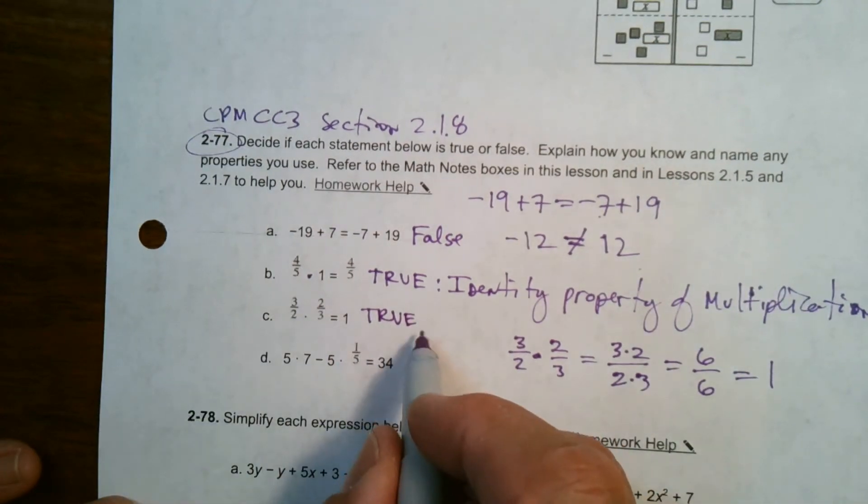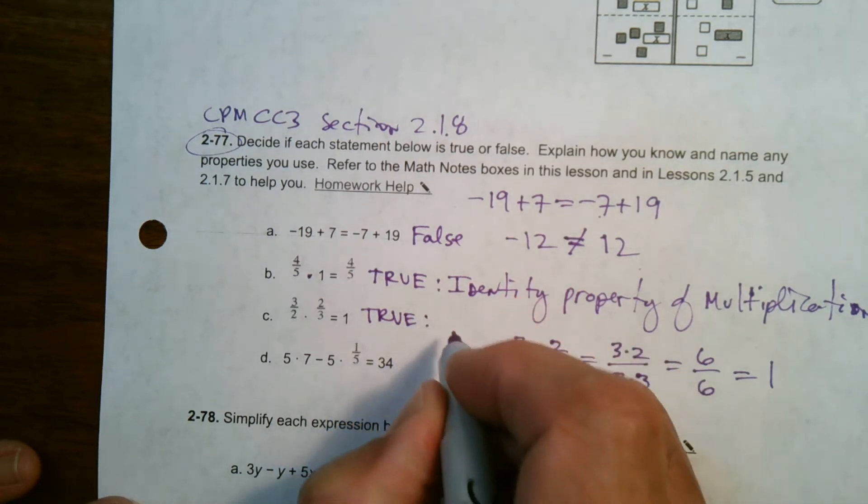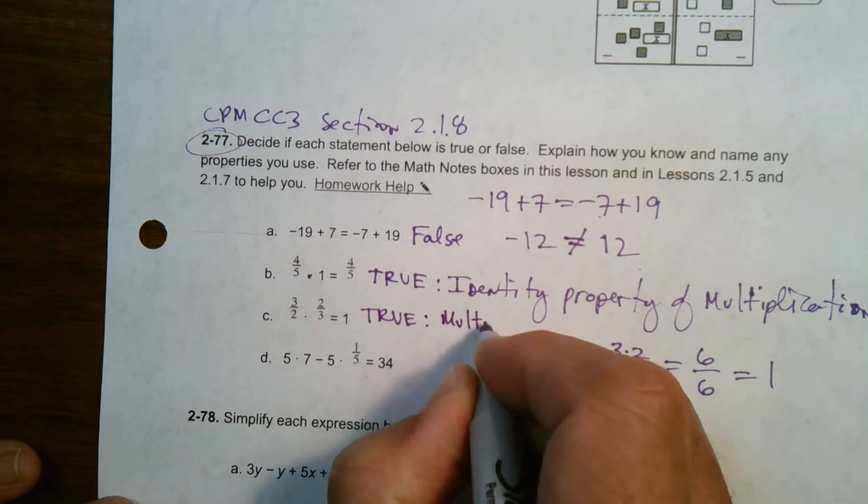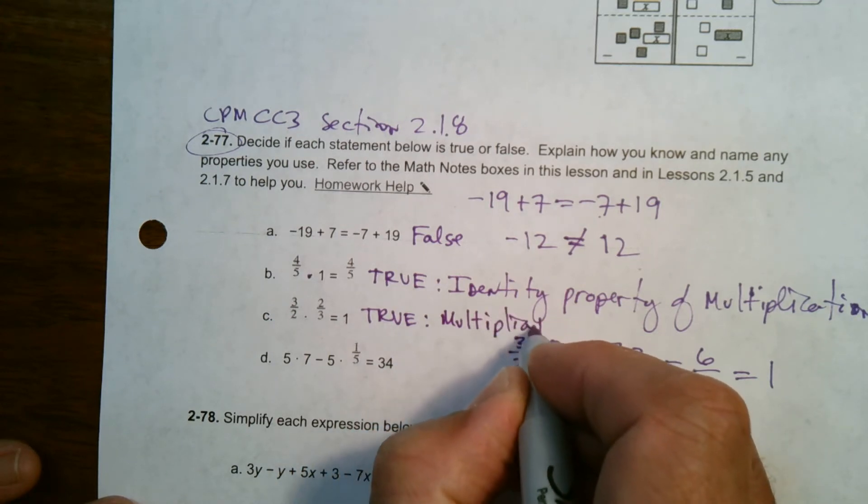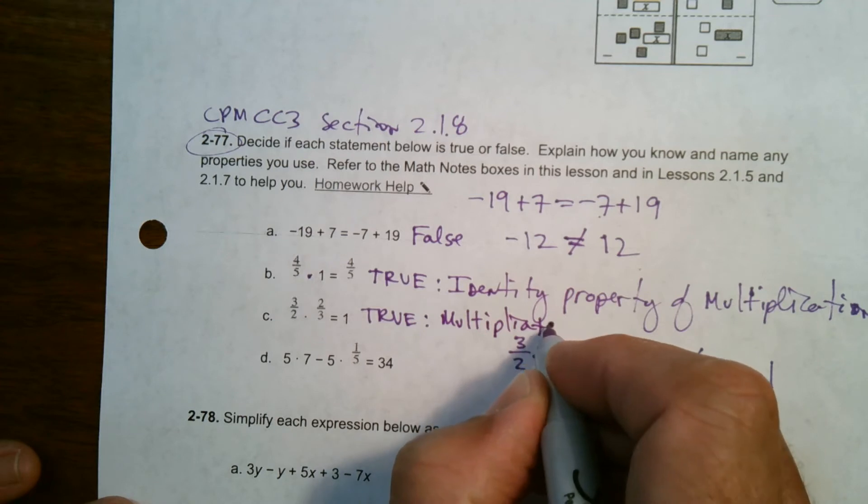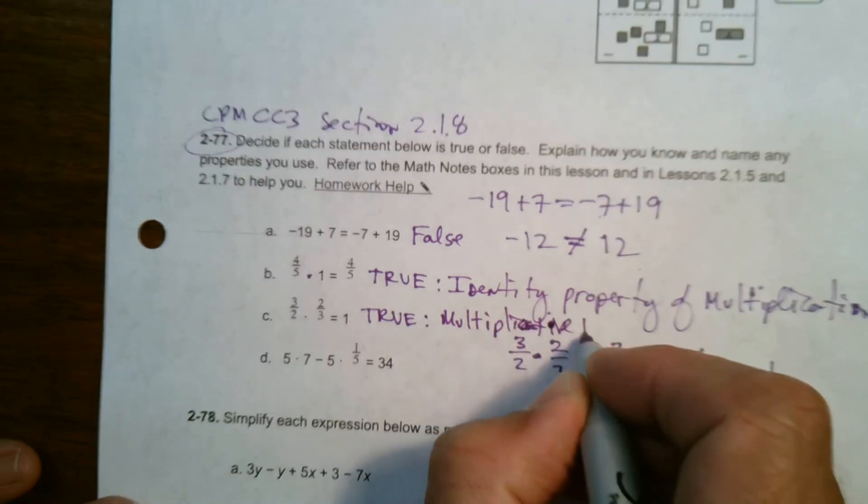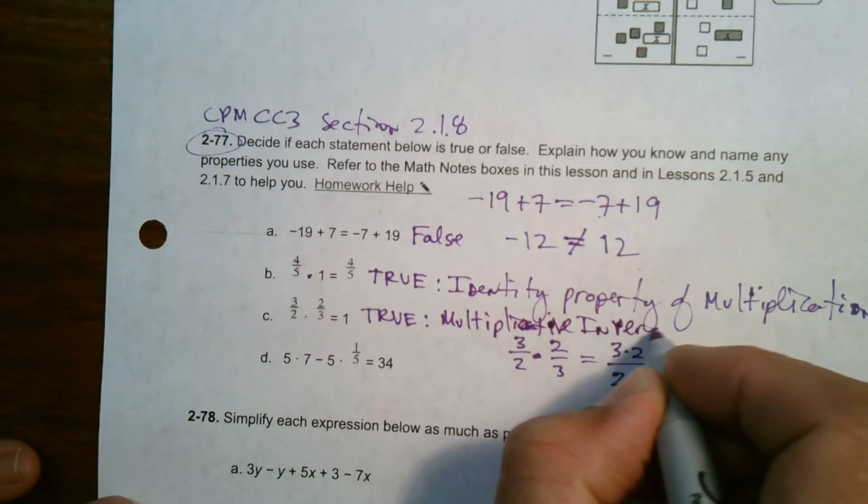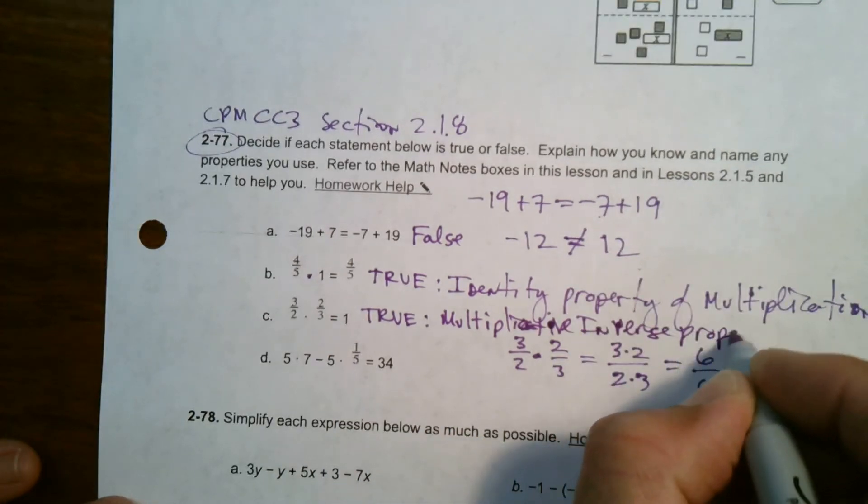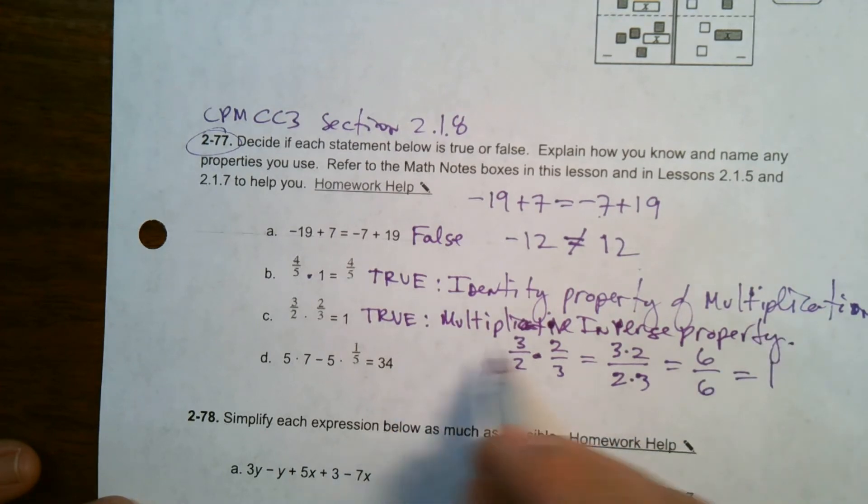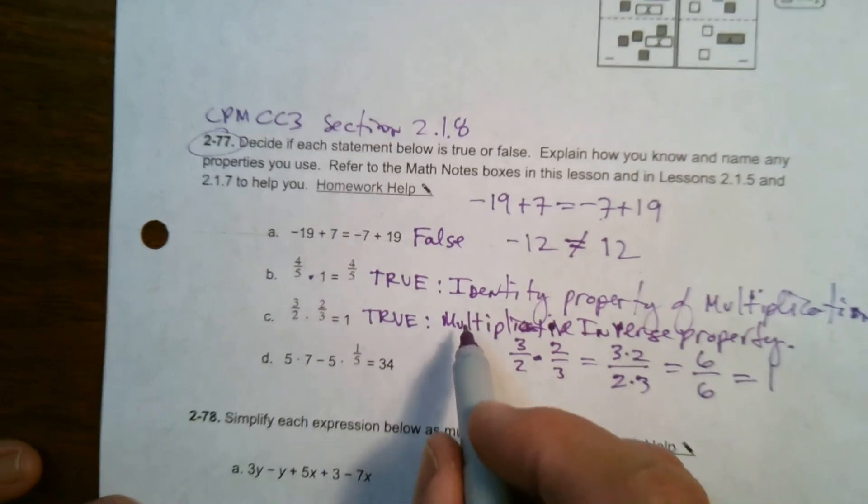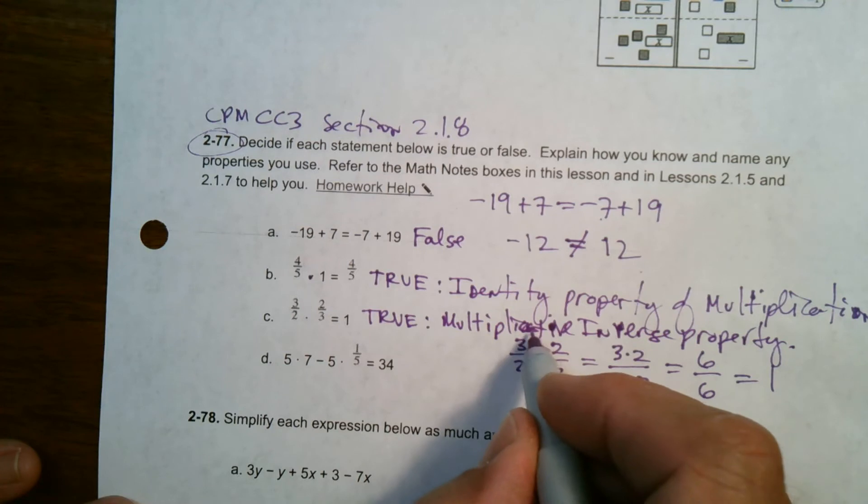So we would say that is true, and there's actually a property that represents. This is what we call the multiplicative inverse property.